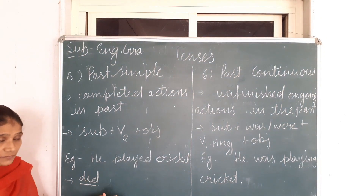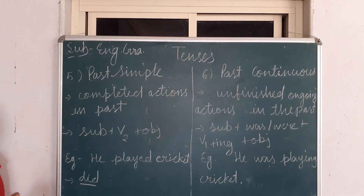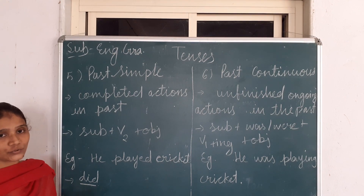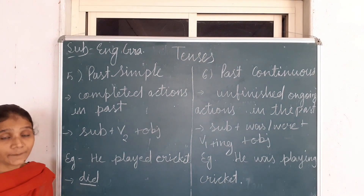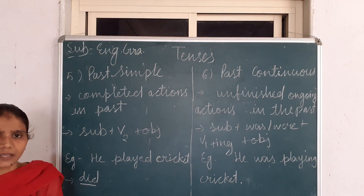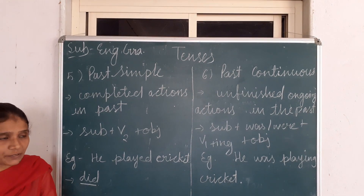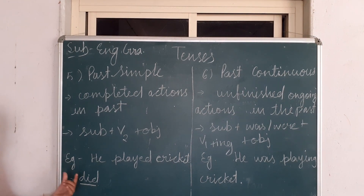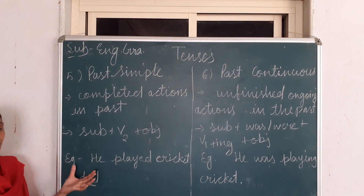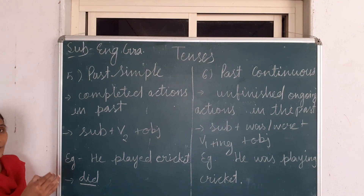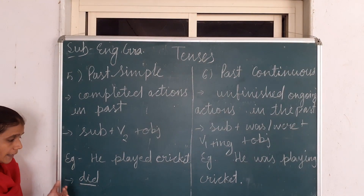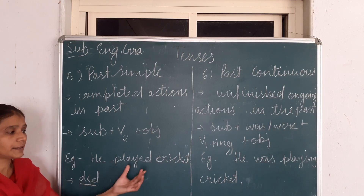Suppose we want to make an interrogative sentence. In an interrogative sentence, we use a WH word, then helping verb, then subject, then main verb, then the remaining part of the sentence. For Yes/No question: 'Did he play cricket?' — with a question mark at the end. For WH question: 'Why did he play cricket?'